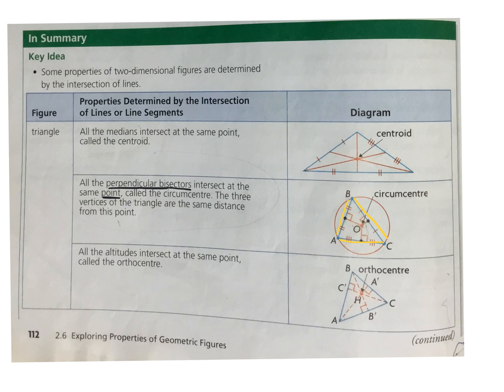So what's a perpendicular bisector? It's a line that bisects — which means you need to find the midpoint of AC and the midpoint of AB. Then you figure out the equation of a line that is perpendicular. It bisects AB but runs perpendicular to it.